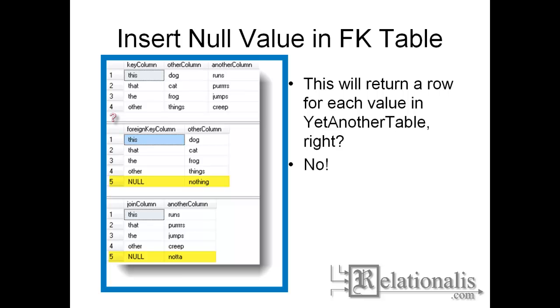The foreign key table has a row with a null value. The yet another table has a join between the foreign key column and has a record with a null value in the join column. The bottom line is that null values cannot be equated to anything, not even another null.